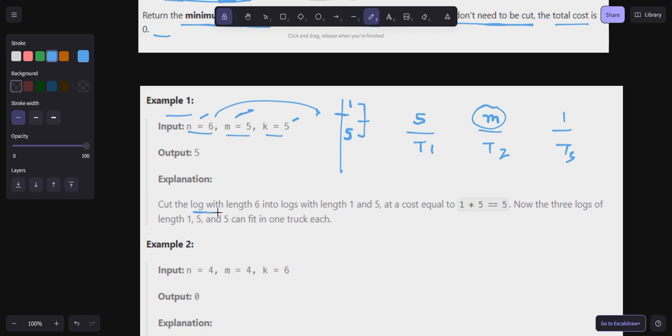Cut the log with length 6 into logs with length 1 and 5 at a cost equal to 1 into 5 which is 5. Now the three logs of length 1, 5, 5 can fit in one truck each. Done.